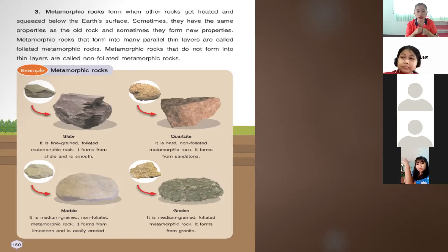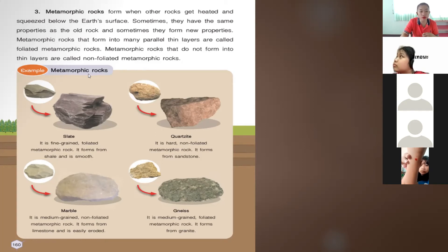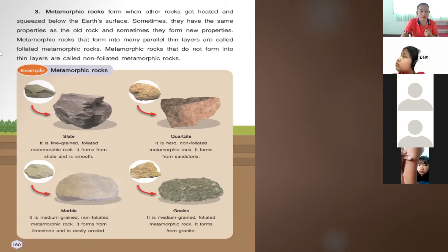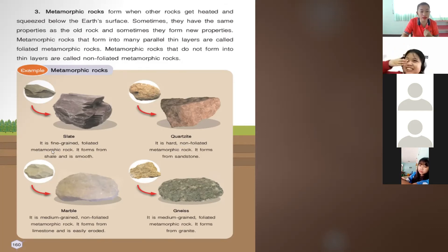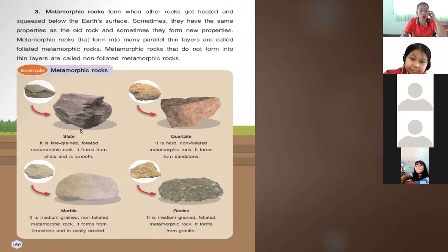Examples of metamorphic rocks: slate, quartzite, marble, and gneiss. Slate is a fine-grained foliated metamorphic rock. It forms from shale and is smooth. So slate is formed from the sedimentary rock shale.